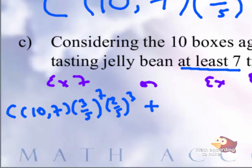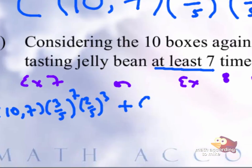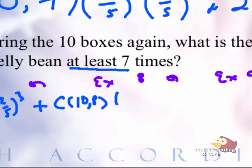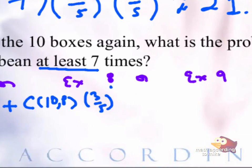And then the OR becomes plus. And now for exactly eight, we'll say 10 choose eight, three-fifths to the eight, two-fifths to the, well, if we have 10 trials and we want eight successes, then how many failures do we want? Scream it really, really loud. I think you said two, very good.